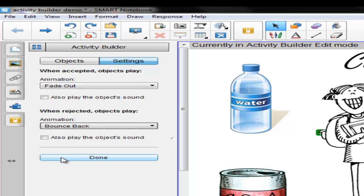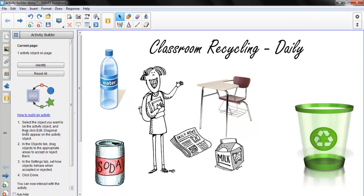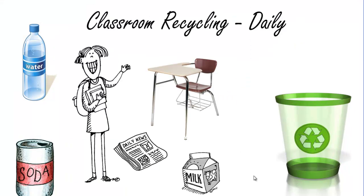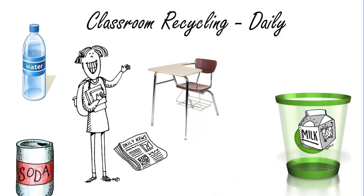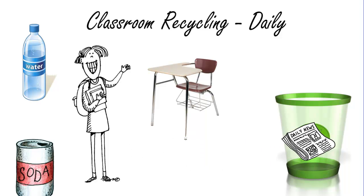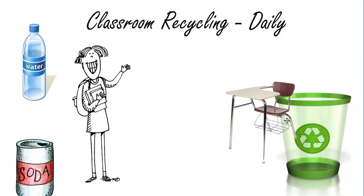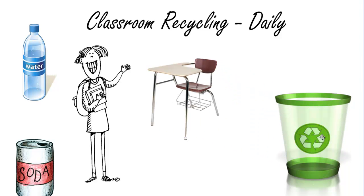Now click Done. Our activity is now ready to begin, and we can see how it works. Students come to the smart board and select the items that can be recycled on a daily basis. Selecting the milk carton, drag it to the recycling bin, and it fades away. Selecting the newspaper, dragging it to the recycle bin, and it fades away. Should a student choose the chair and drag it to the recycling bin, it will bounce back because that is an incorrect answer.